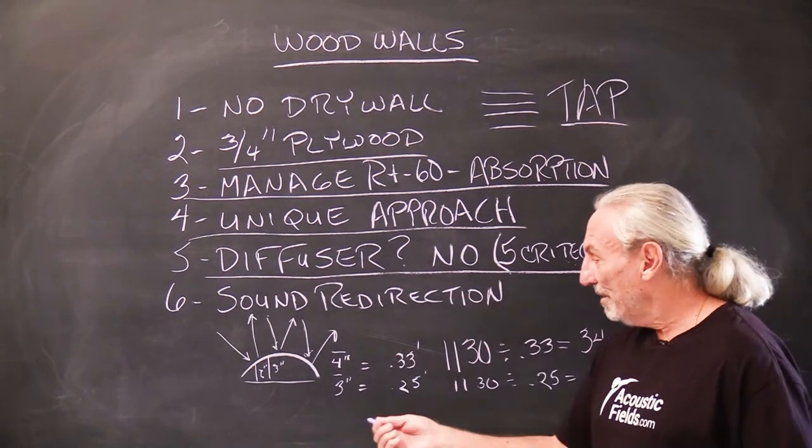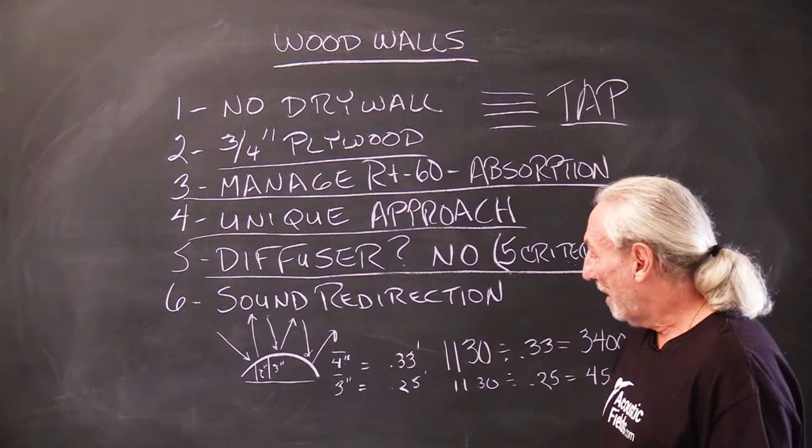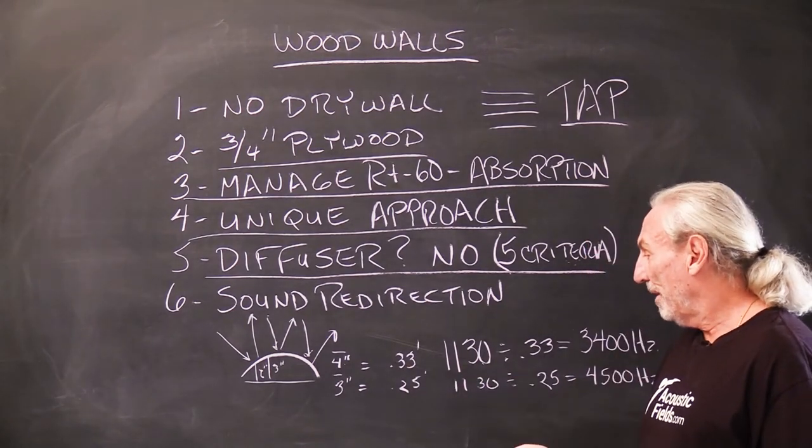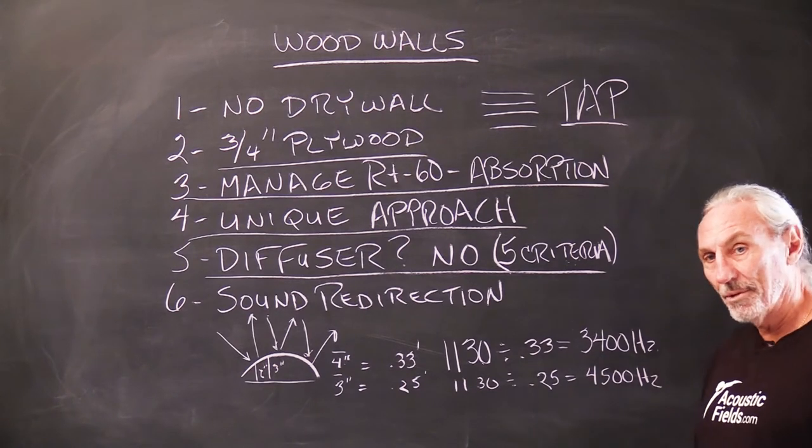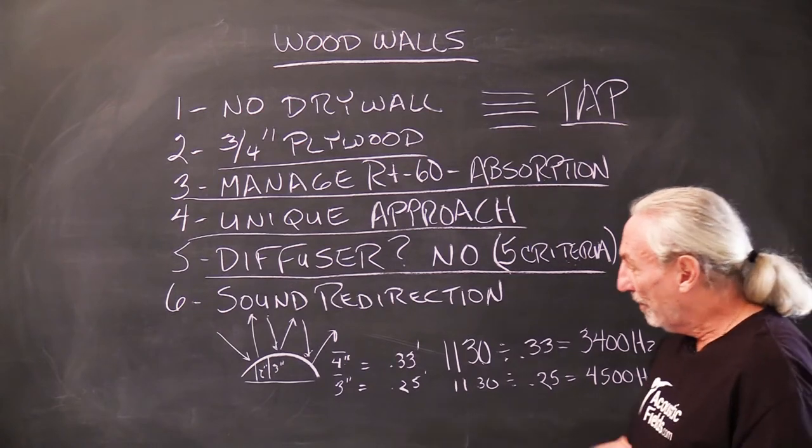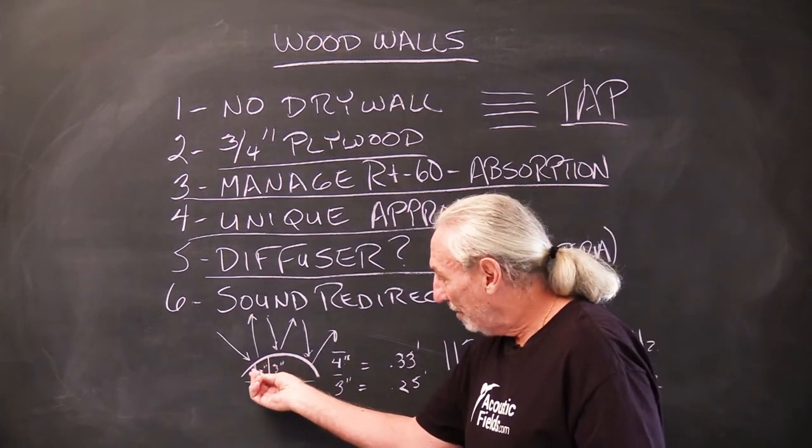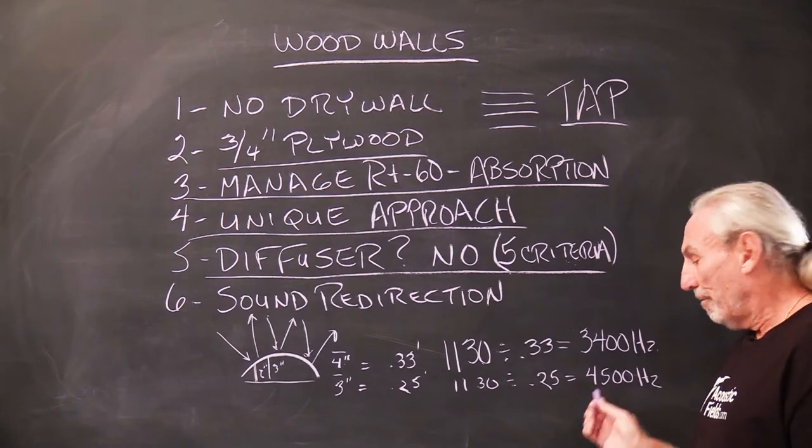And let's look at the, I mean, if the thing is four inches thick, what's that? 0.33 of a foot divided by 1130, the speed of sound, we get 3400 cycles. Step out of the frame a little bit. So, it's going to get 3400 cycles. If we go down in the curve a little bit, it's two inches.